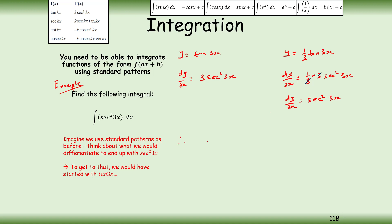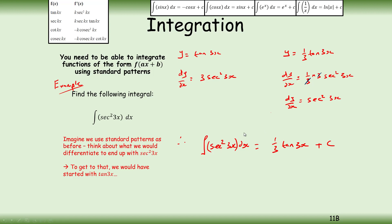So I can say that the integral of sec²(3x) with respect to x equals ⅓·tan(3x) + C. You can see the sort of process — we can find a general form for this. Copy this example down, then hit play to look at the general form.